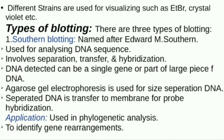First of all, we are going to study Southern blotting. Southern blotting is named after Edward M. Southern. We can use it to analyze the DNA sequence. This involves three processes: separation, transfer, and hybridization. The membrane, stain, and electrophoresis are different. Basically, we use separation, transfer, and hybridization as the steps.